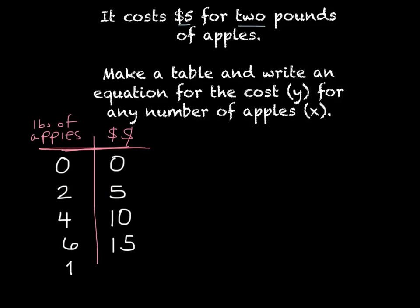I also want to figure out how much just 1 pound costs. I need to split the $5 in half, so half of 5 is $2.50. I can write that as 5 over 2. So the cost divided by the apples gives me $2.50.